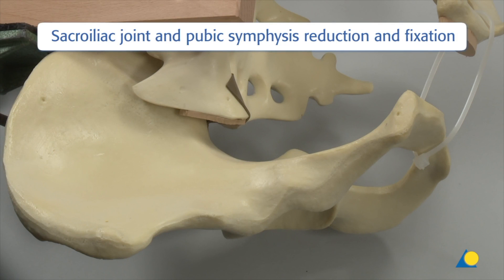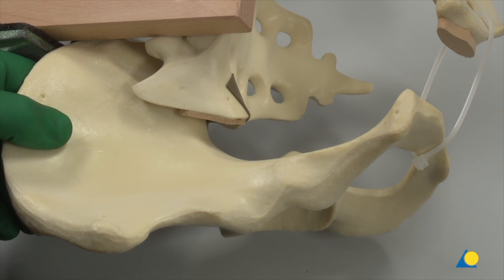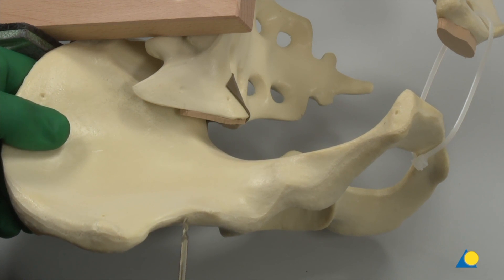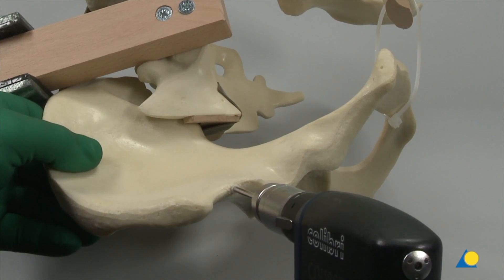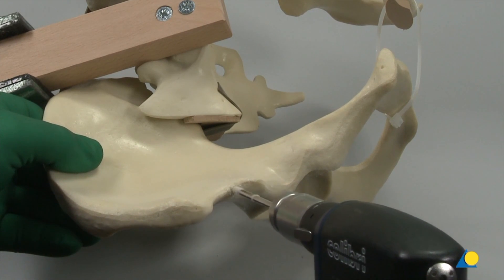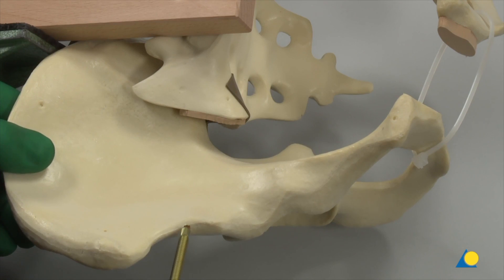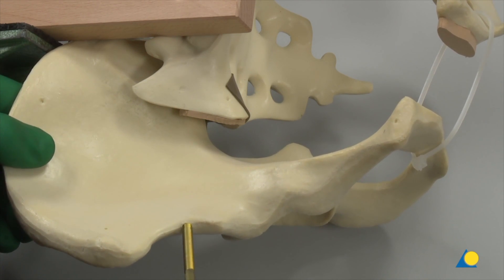Sacroiliac joint and pubic symphysis reduction and fixation will now be shown. Make a 3.5 mm hole with the entry point at the level of the interspinous notch directed toward the roof of the greater sciatic notch and into the sciatic buttress. Insert a shunt screw by hand, not by machine, so that the opposite cortex may be felt when it is reached.